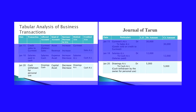On January 20th: cash withdrawn for personal use by the owner. The two affected accounts are drawings account and cash. Drawings means the amount withdrawn by the owner for personal use — it is taken from the capital, so it affects the capital account. Cash is going from the business and comes under the asset account. Drawings decrease capital and cash is also decreasing. So drawings account will be debited and cash account is credited — when capital decreases, drawings account is debited; when asset decreases, cash account is credited.